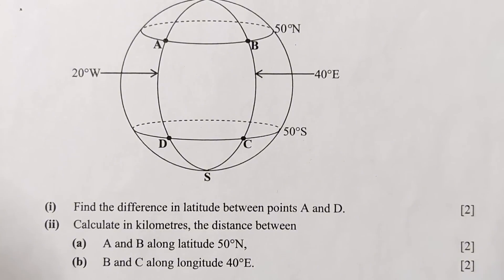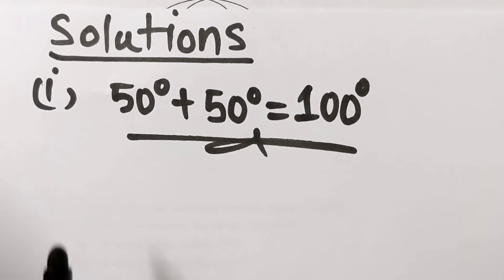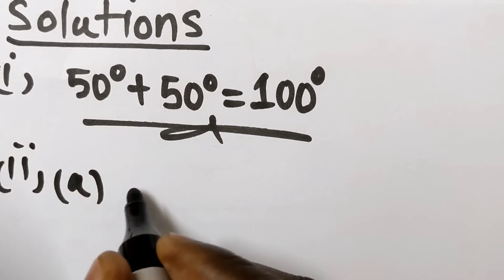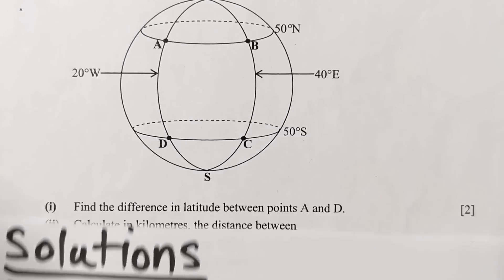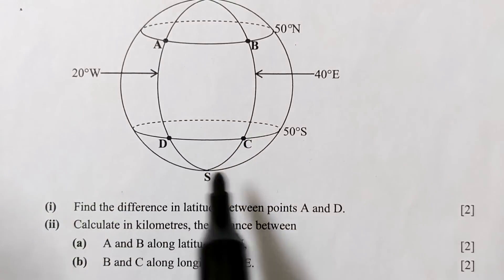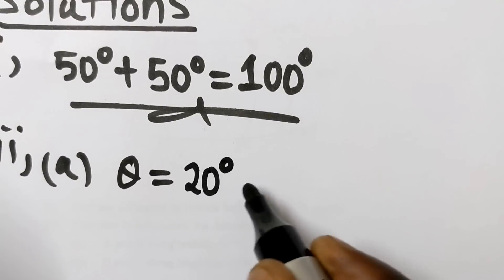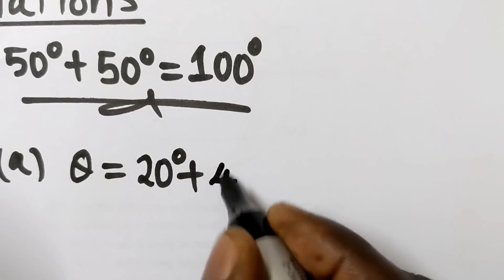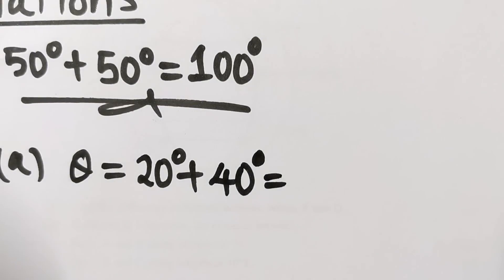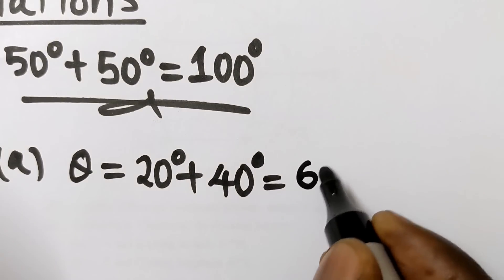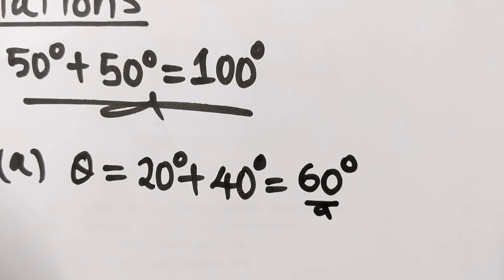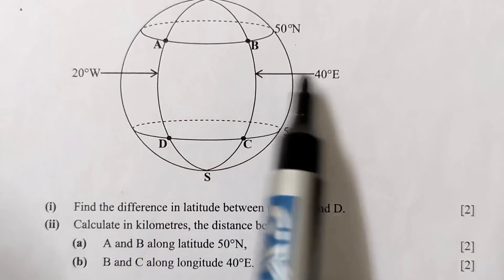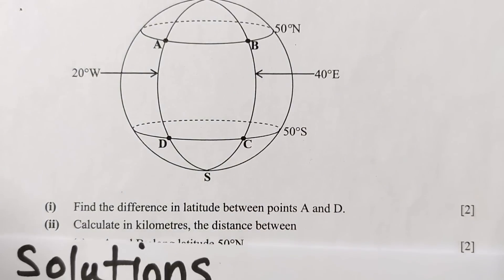Let's get the difference in longitude. Theta, which is the difference in longitude: A is falling on 20 degrees west, plus B is falling on 40 degrees east. So 20 degrees plus 40 degrees gives 60 degrees. That is the difference in longitudes. A is on west and B is on east, so we simply add the two values given to get the difference.